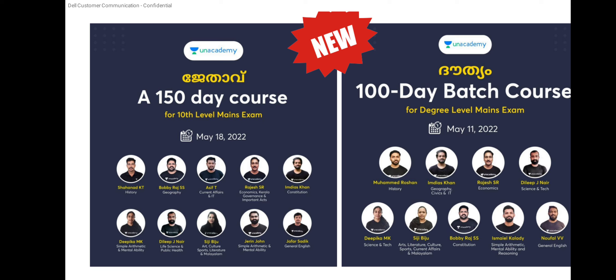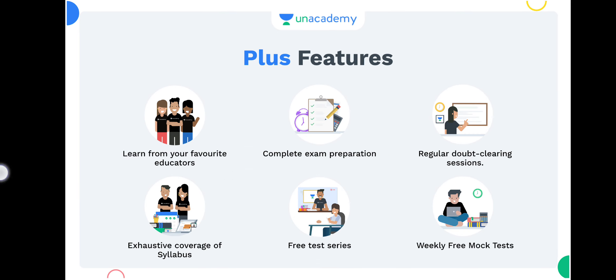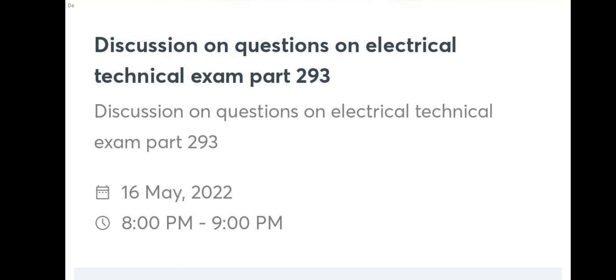May 18 is the 158th batch course for the 10th level main exam. A new batch course already started May 11 — the 108th batch course for degree level. This is running free. A test championship is on days 15, 22, and 29 May at 8 PM. First rank gets a 1-year academy subscription. Ranks 2–5 get 75% scholarship; ranks 6–10 get 50% scholarship. The test has 100 questions and 90 minutes.